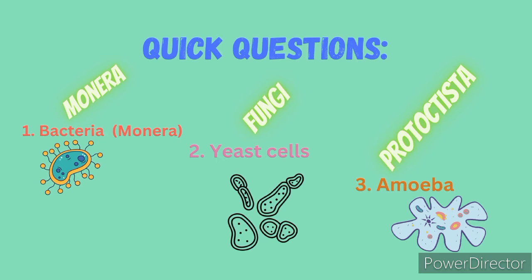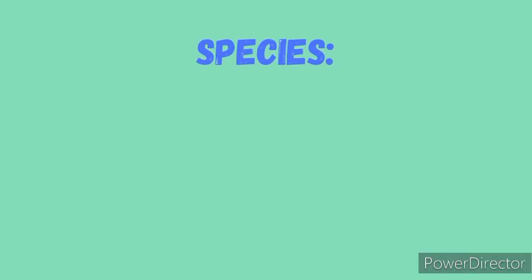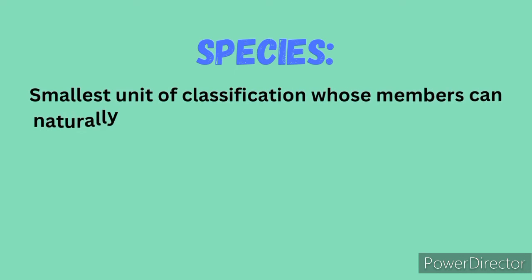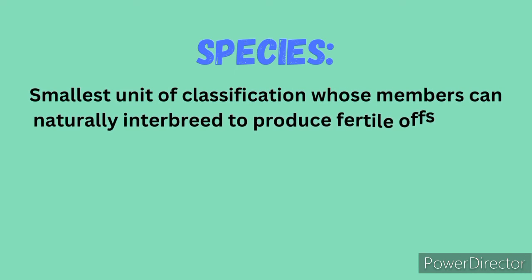And there we have it — how many did you get right? I hope it was all of them. Now let's proceed to species, the smallest unit of classification whose members can naturally interbreed to produce fertile offsprings.